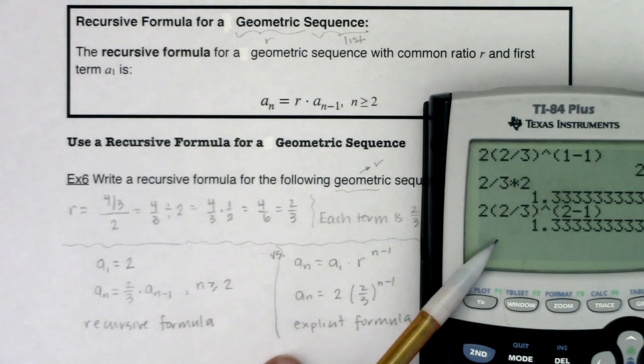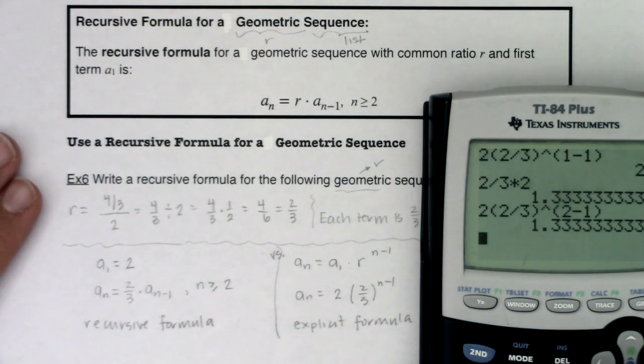So here we go. Recursive, explicit. I just want you to see they're both producing the same answer, which they should. They're just two different ways of writing up the same formula.